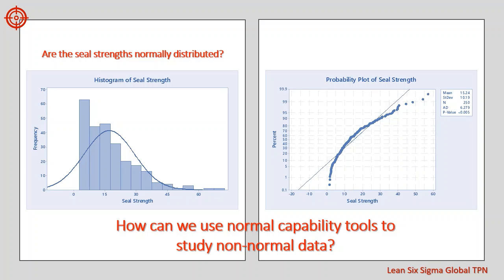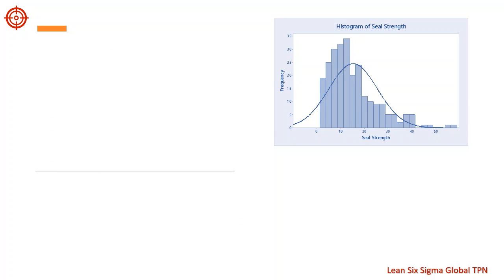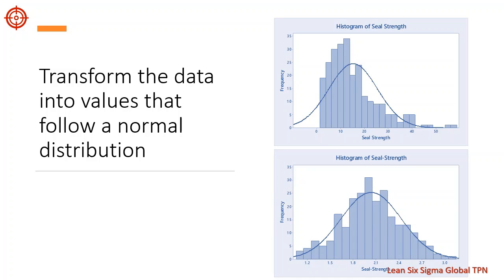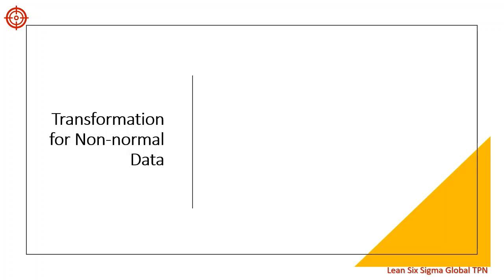So how can we use normal capability tools to study process data that are clearly not from a normally distributed population? We can try to transform the data into values that follow a normal distribution. If the transformed values follow a normal distribution, we can use the normal capability tools studied earlier. We normally use two transformation methods to transform non-normal data to normal: the Box-Cox transformation and the Johnson transformation.